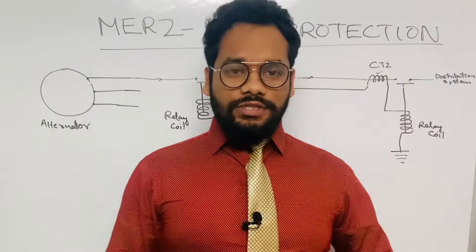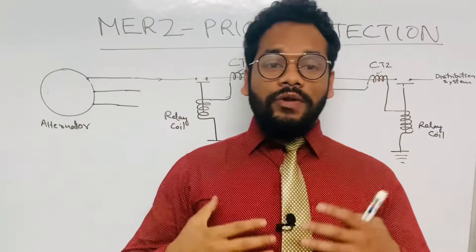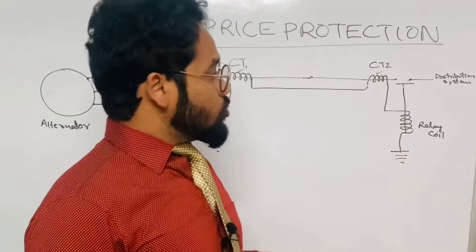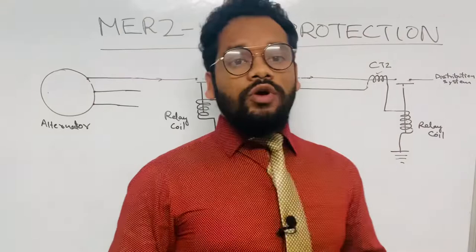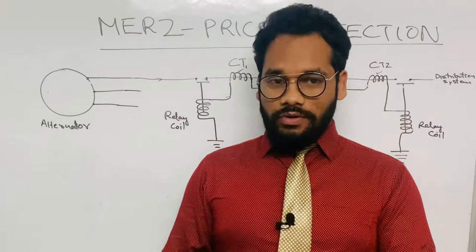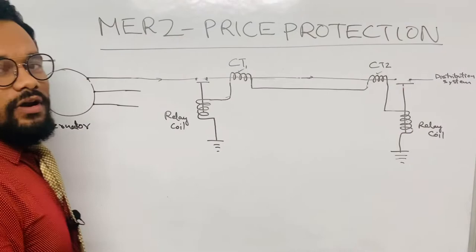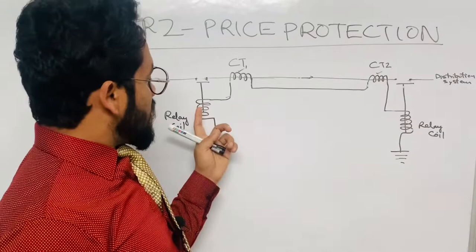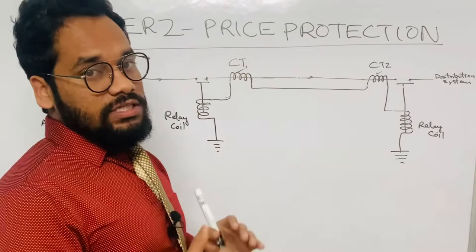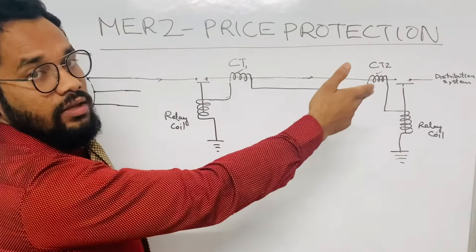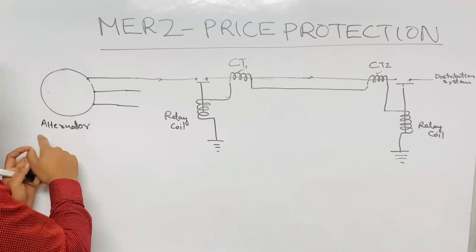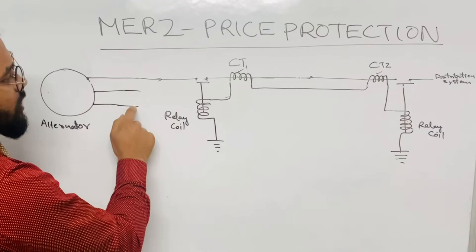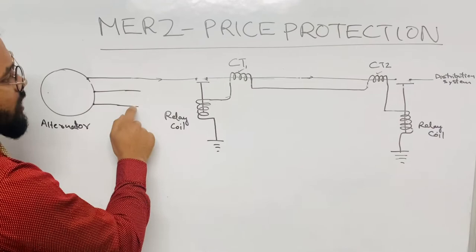To summarize: the Merz-Price protection system is a type of differential protection used in AC systems — specifically AC generating systems like alternators. It is not used in DC systems because current transformers cannot work in DC systems. It provides protection between phases and from phase to ground. The system employs two current transformers: one located near the source and the other at the entry point of the distribution system, interconnected by relay coils.